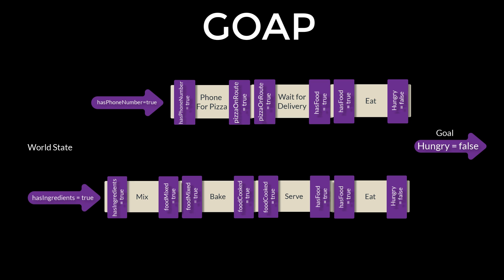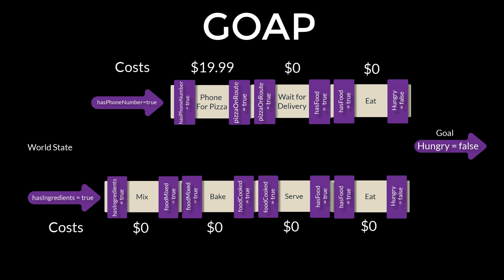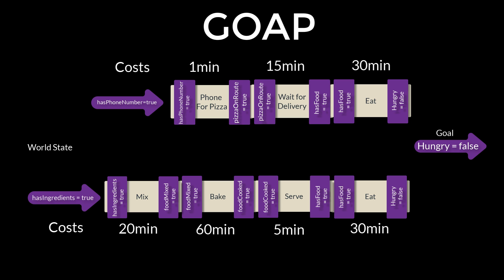Now that we have two plans that will achieve the goal, which one do we choose? We add a cost to the plans. We might assign each action a monetary cost — in this case, the pizza plan works out dearer, assuming we already have the ingredients for baking. We might instead opt for a time-based cost, which would make the baking option more costly. With costs assigned to each plan, the cheapest one can be selected first. If there are multiple plans with the same lowest cost, then one can be picked at random.